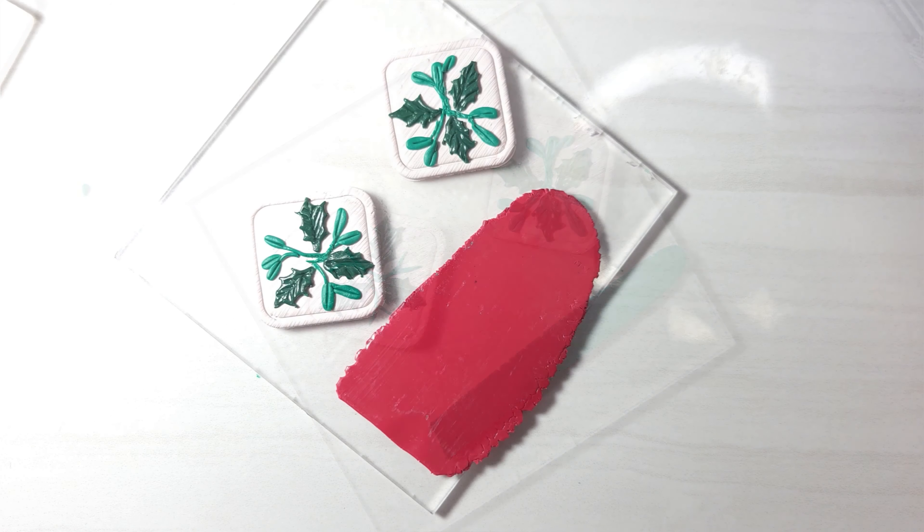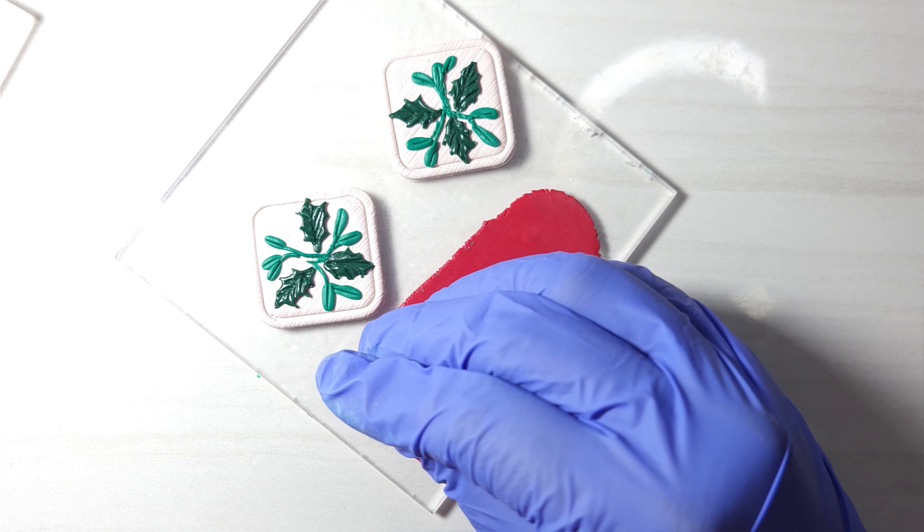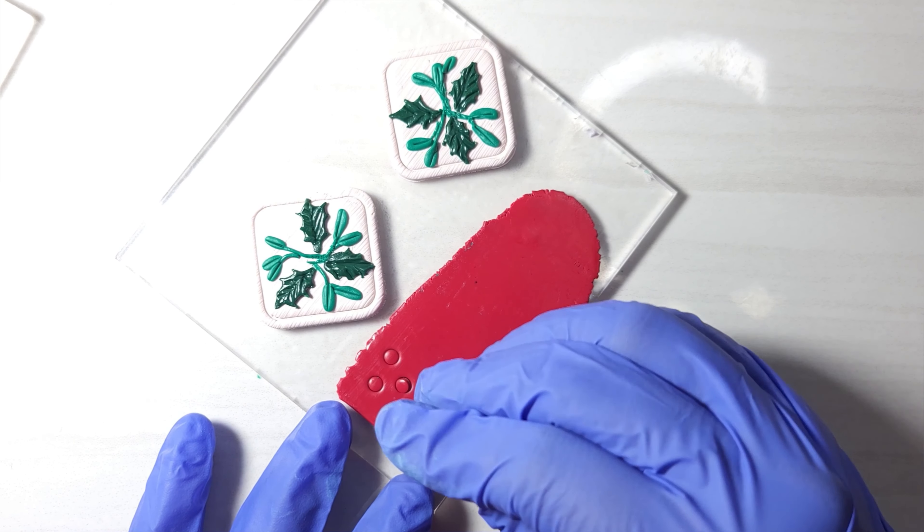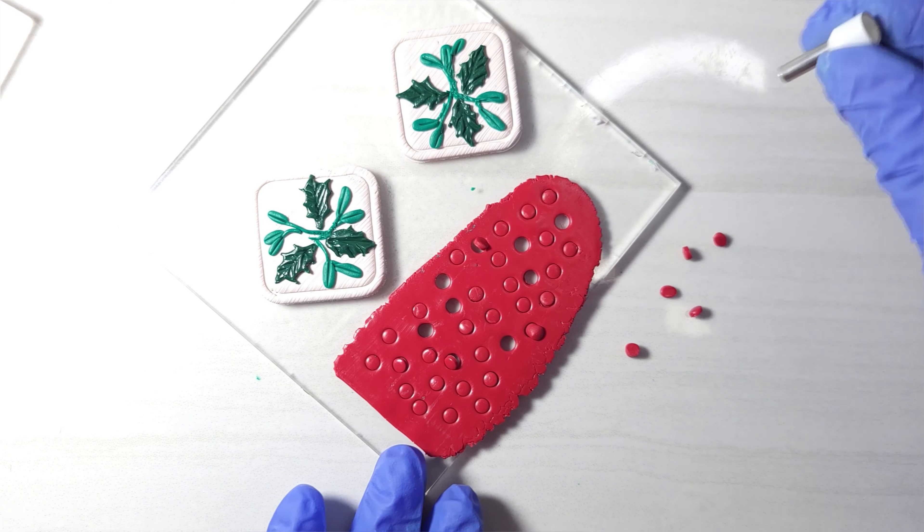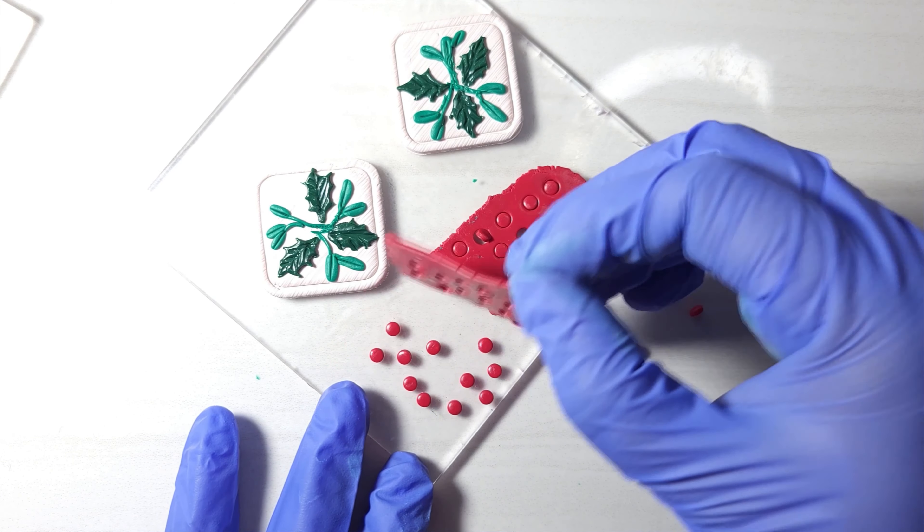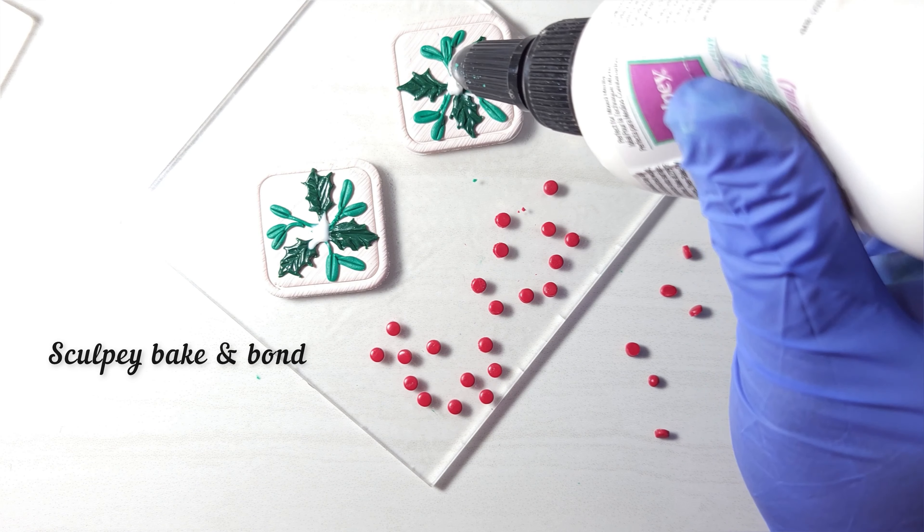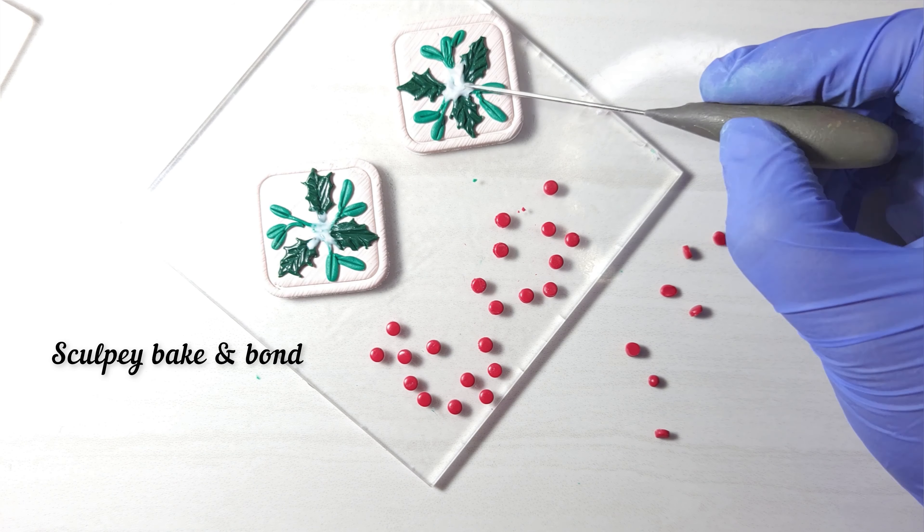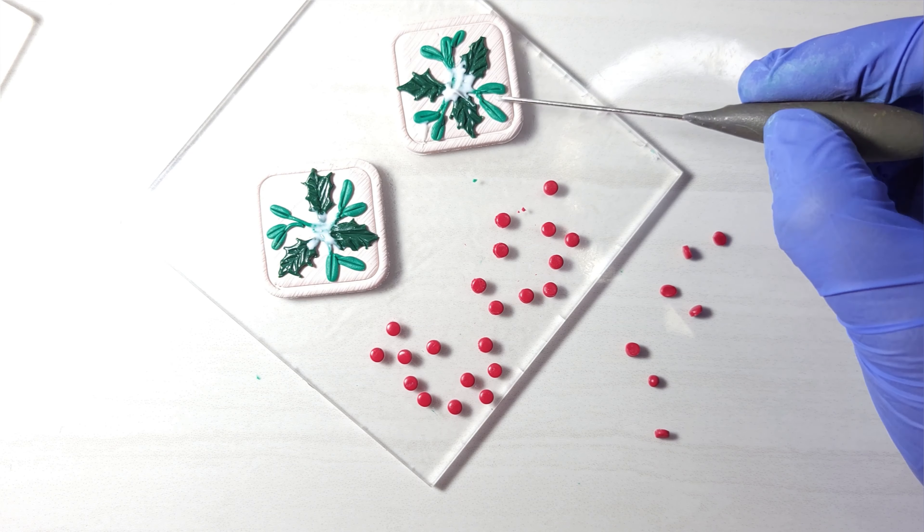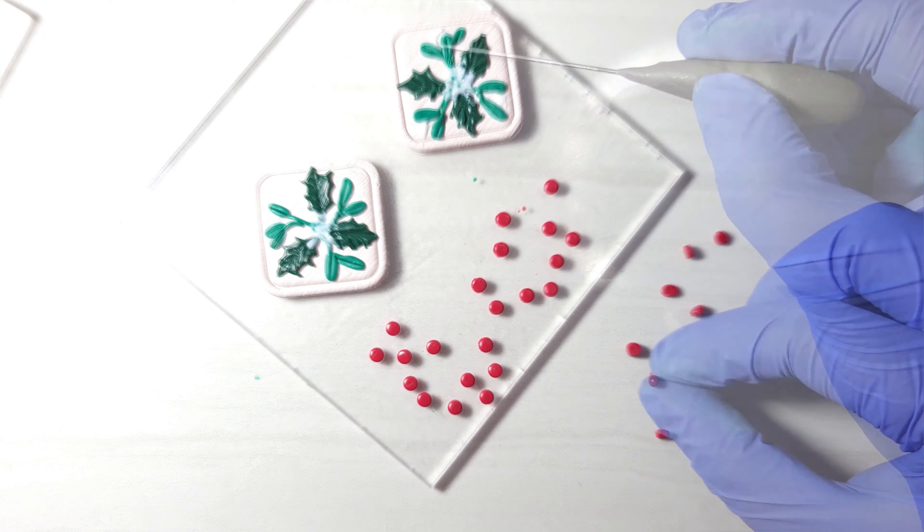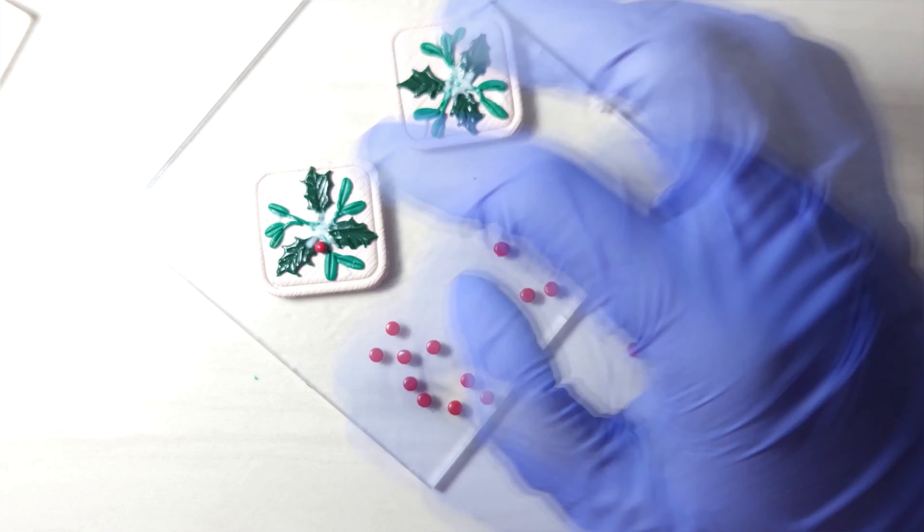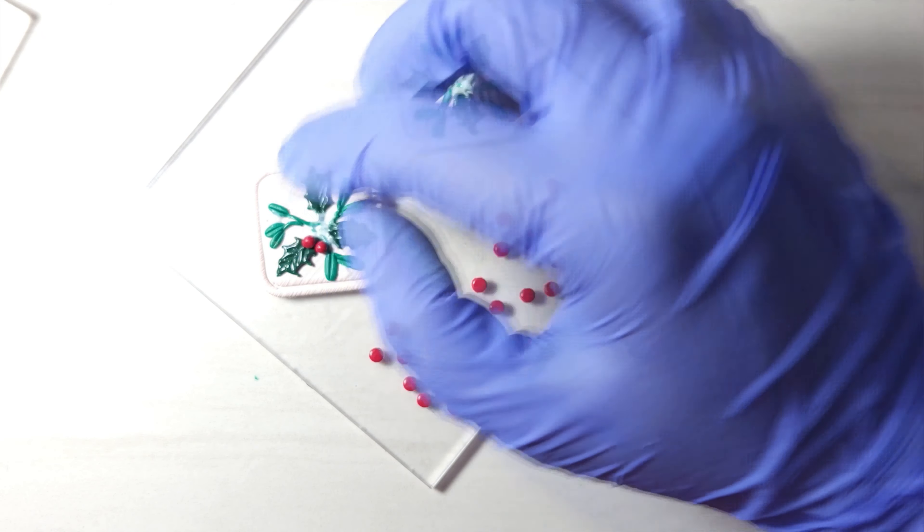To make berries, use bright red clay. Use glue before attaching berries, otherwise they might fall after baking. Add as many berries as you like in various sizes.